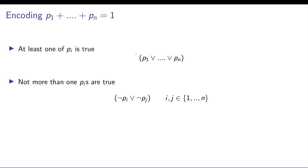Now the second requirement is that not more than one pi's are true. So if any time two pi's become true then it should become unsatisfiable. So what you can encode is for all combinations of i and j's you can say that not of pi or not of pj must be true. If both of them are true then it becomes false.